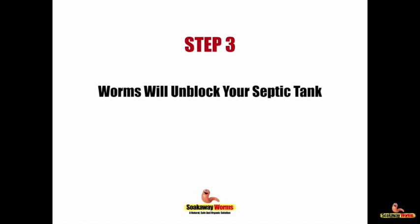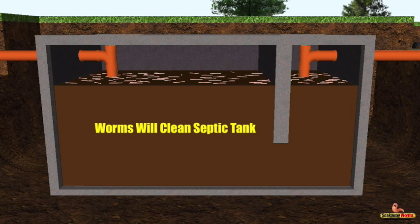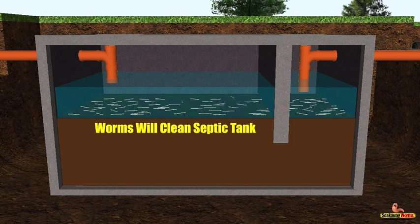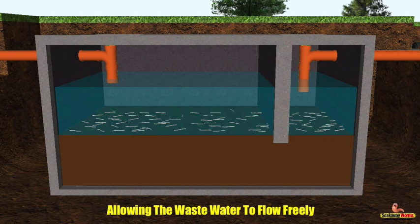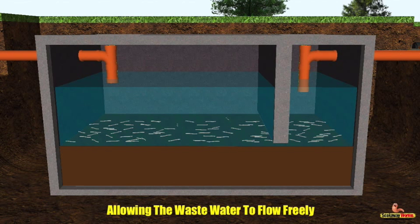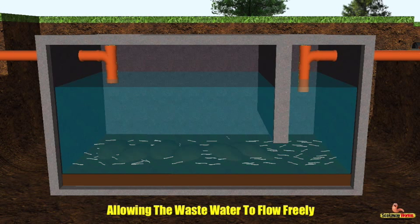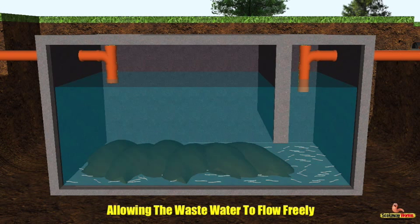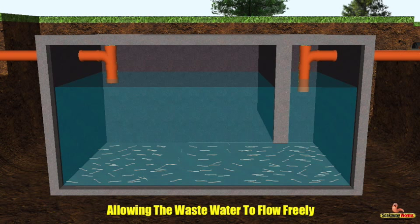Soak away worms will also clean and unblock your septic tank. Whilst the worms unblock your soak away, they'll also be burrowing, eating and cleaning out your septic tank — eating that sludge, fat and grease. Not only will they unblock and clean your entire septic tank and soak away system, they'll also keep them unblocked and prevent them from becoming clogged and blocked again, allowing wastewater to make its way freely from the house to the tank to the soak away and naturally into the soil.